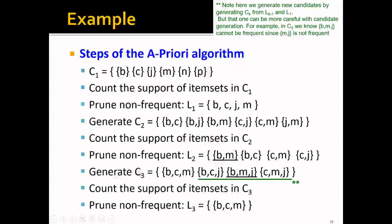And from this, we will generate C_3, which is the candidate triples. And here we have three, or sorry, four candidate triples.